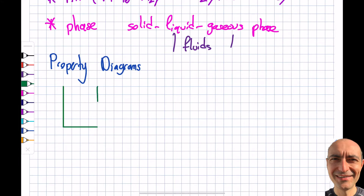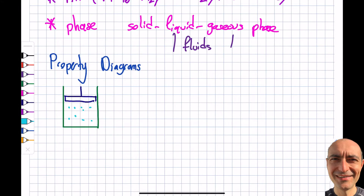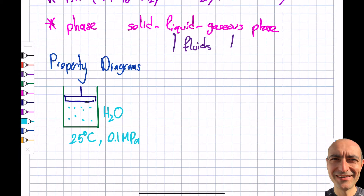A typical example used in virtually every textbook is a piston-cylinder device. Let's say we have water inside — water is the most common pure substance studied in thermodynamics. We start at 25°C and 0.1 MPa, which is essentially atmospheric pressure (100 kPa). We then apply heat — the red indicates heating — so the question is: what happens to this liquid?